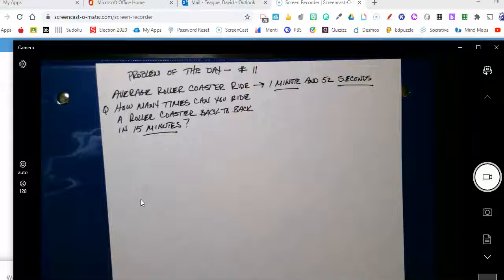Okay, so you had a problem with problem of the day number 11. And so what I have here is I wrote it out for you. So the question is, the average roller coaster ride is 1 minute and 52 seconds. And the question is, how many times can you ride a roller coaster back to back in 15 minutes?